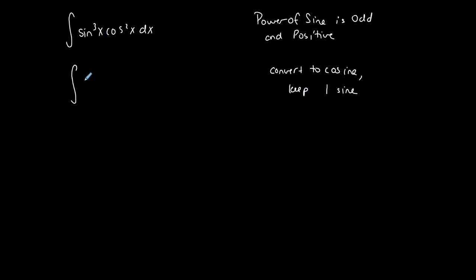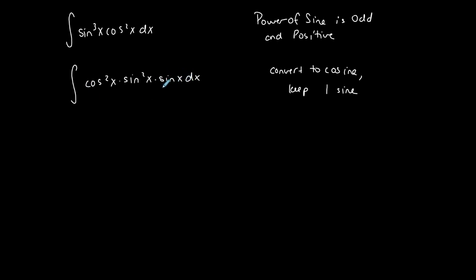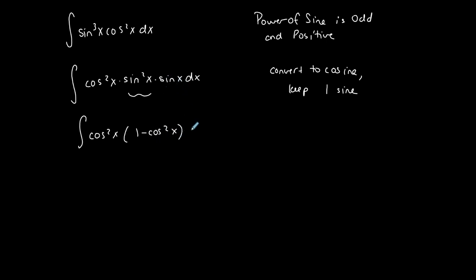I'm going to rewrite this by bringing cosine squared to the front and separating sine to the third as sine squared times sine. I have the even exponent sine squared, and this one extra sine because sine has an odd degree. If everything is in terms of cosine, I can use that extra sine later for u-substitution. Using the Pythagorean identity, sine squared is replaced with one minus cosine squared, and I keep this extra sine of x.